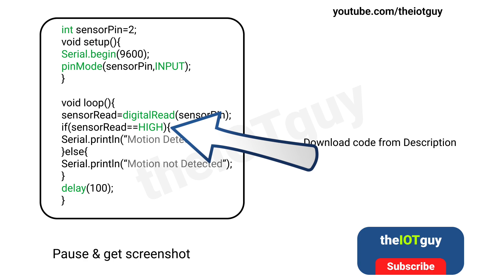Then we give serial output, in other words we print onto the screen as motion detected. Else we print motion not detected. Then we have a delay of about 100 milliseconds and we repeat the following looping statements or steps again and again. Don't worry, I have this code in the description, so go ahead and download it.